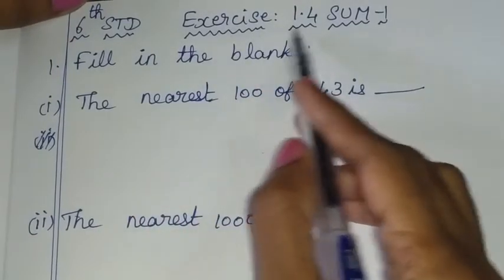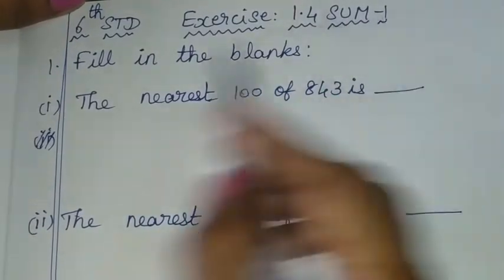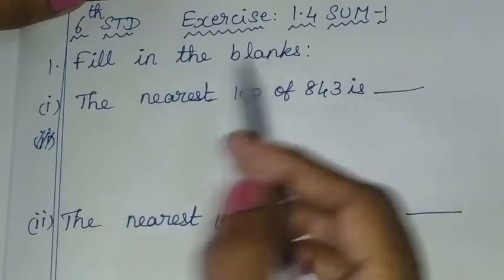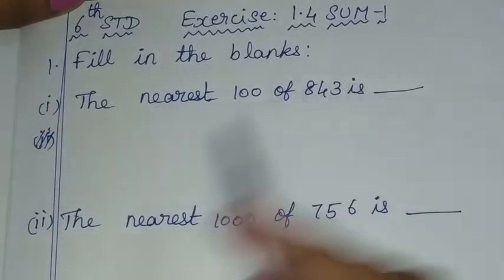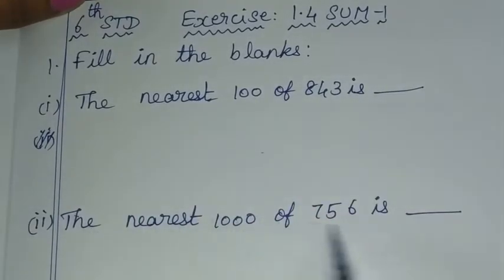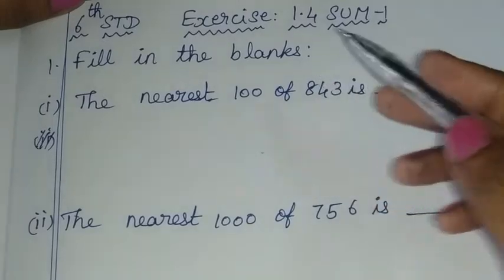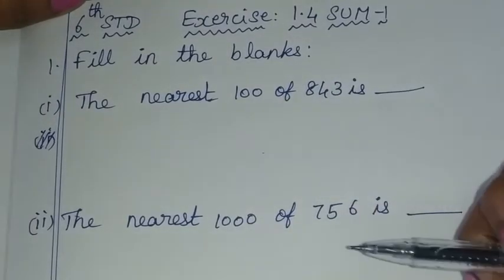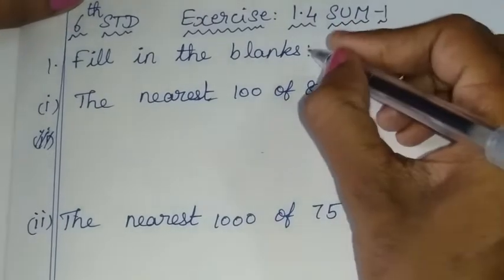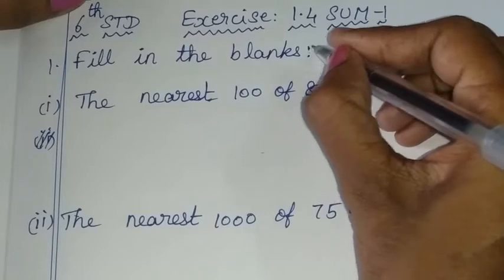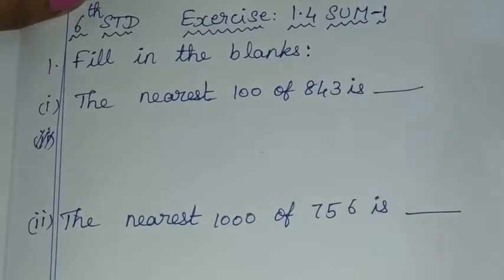Hello children! Let's talk about Sum No. 1 — Fill in the blanks. The nearest hundred of 843 is, and the nearest thousand. You can learn rounding off through this exercise. If you want to understand this, let me give you a little example.